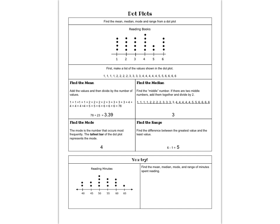The dot plot here shows us the number of books read by students in the class. The dot plot tells us that four students read one book. That's why there are four dots over the number one. Four students read two books, four students read three books, five students read four books, two students read five books, and four students read six books.